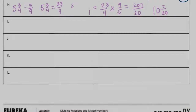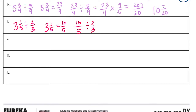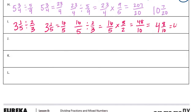Part I: three and one-fifth divided by two-thirds. Let's make three and one-fifth into sixteen-fifths. So we have sixteen-fifths divided by two-thirds — invert and multiply. Sixteen times three is forty-eight, five times two is ten. So we have forty-eight tenths, which equals four and eight-tenths, or four and four-fifths.